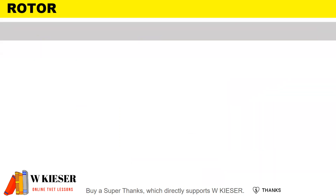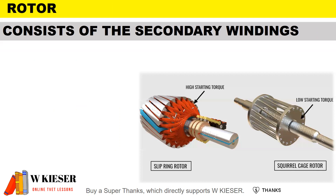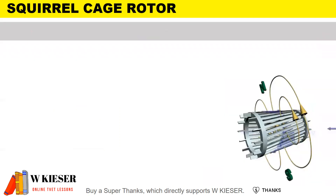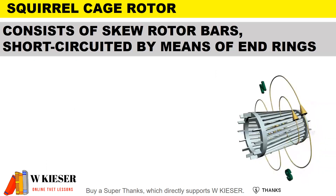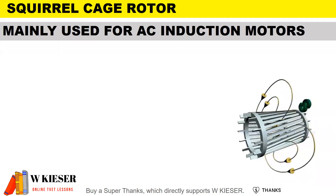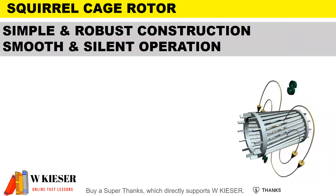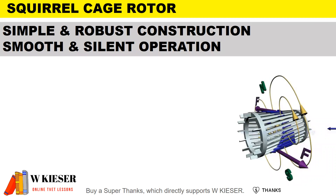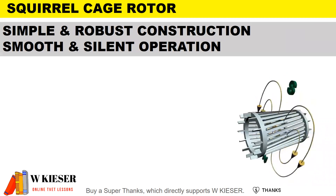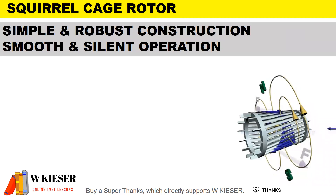For the rotor, it consists of the secondary windings. We have the squirrel cage rotor, which consists of skew rotor bars short-circuited by means of end rings. They are mainly used for AC induction motors. The construction is simple, robust, and strong, with smooth and silent operation, which means it requires very little maintenance.